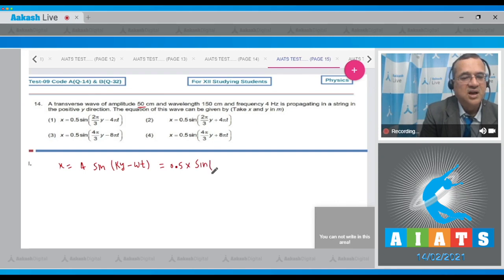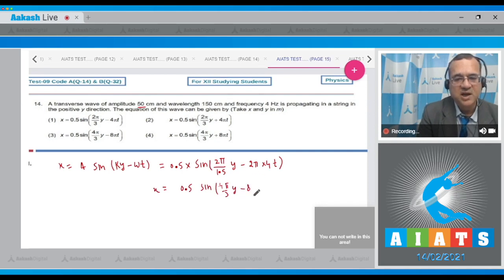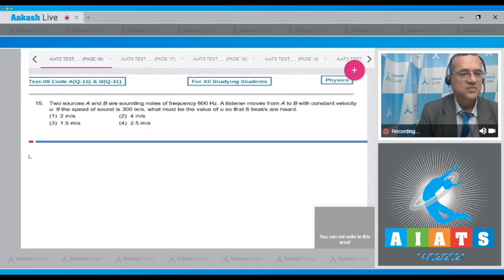Sine k is 2 pi by lambda, so 2 pi by lambda - lambda is 1.5 - into y minus omega is 2 pi into n. n is equal to 4 into t. So this is 0.5 sin of 4 pi by 3 into y minus 8 pi t. Look at the options - it's the third option. Answer to this question is the third option.